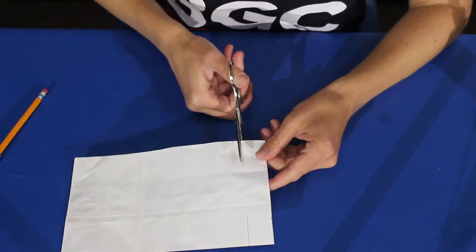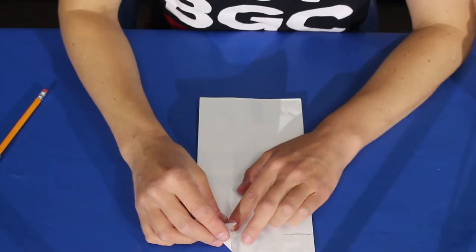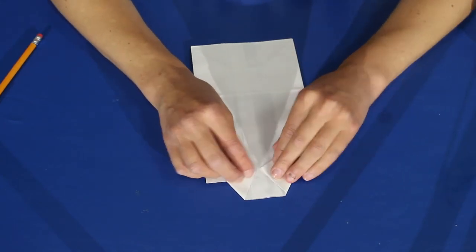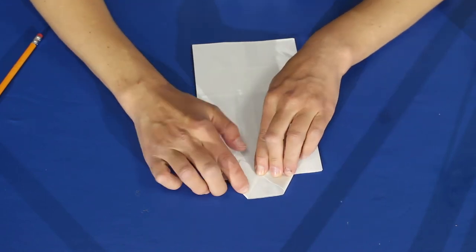Make slits one inch down that go one and a quarter inch into your bag. Again, you can use a ruler and measure it out or you can just eyeball it. Once that's done, fold those flaps down so they look like a collar.